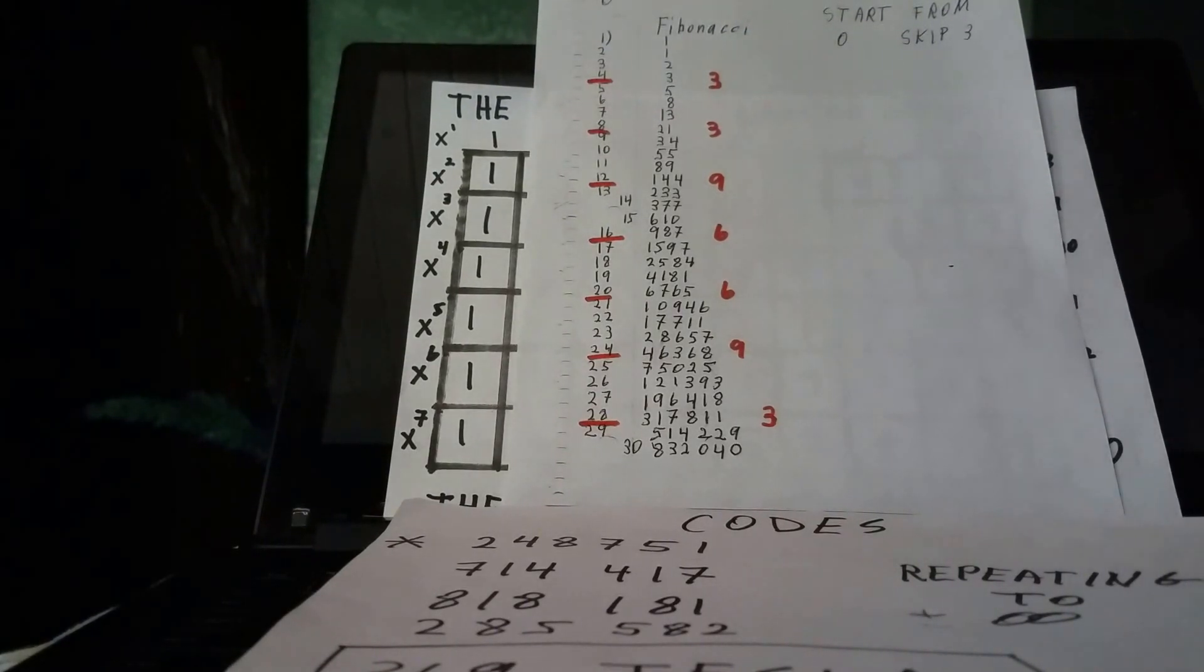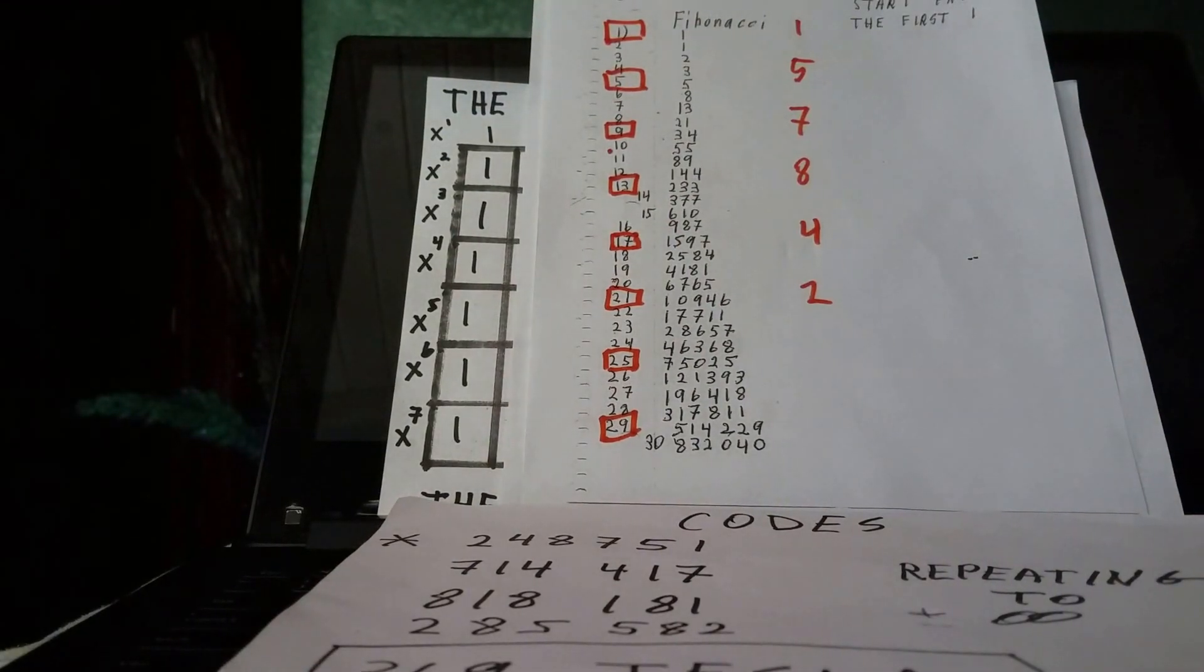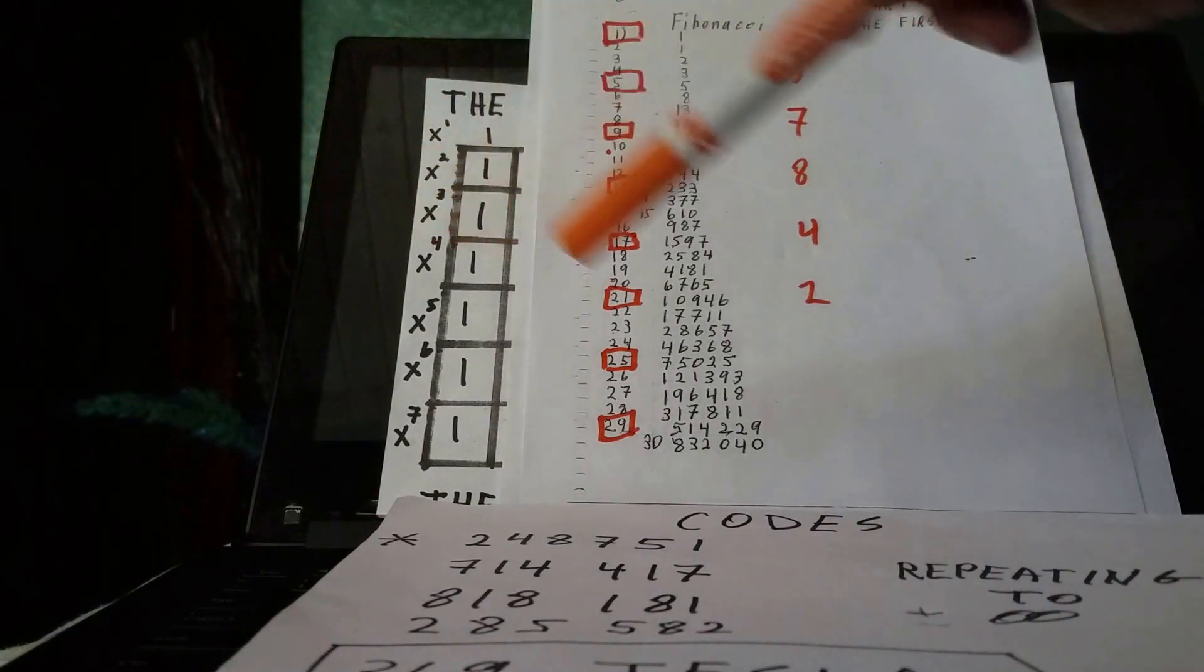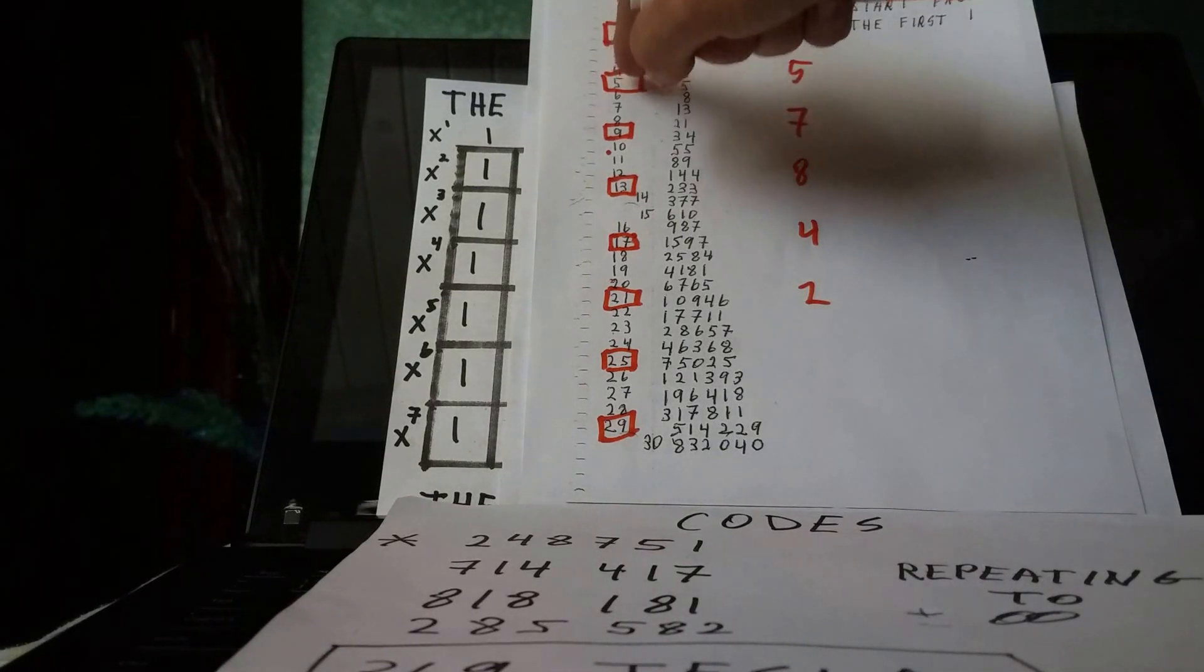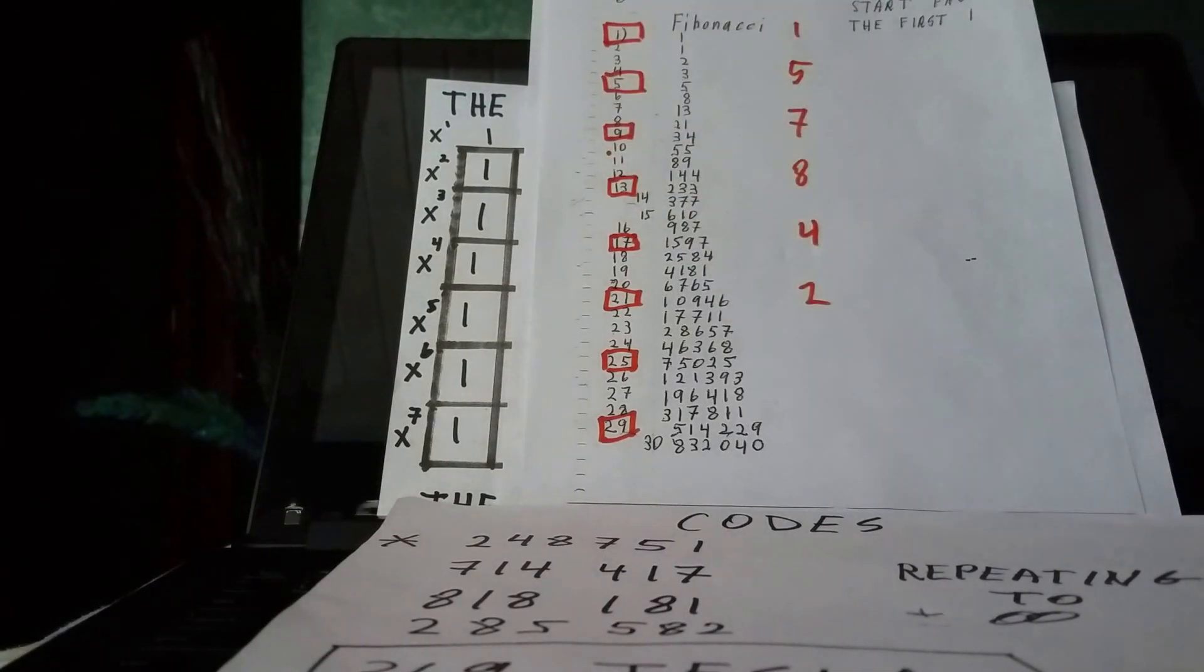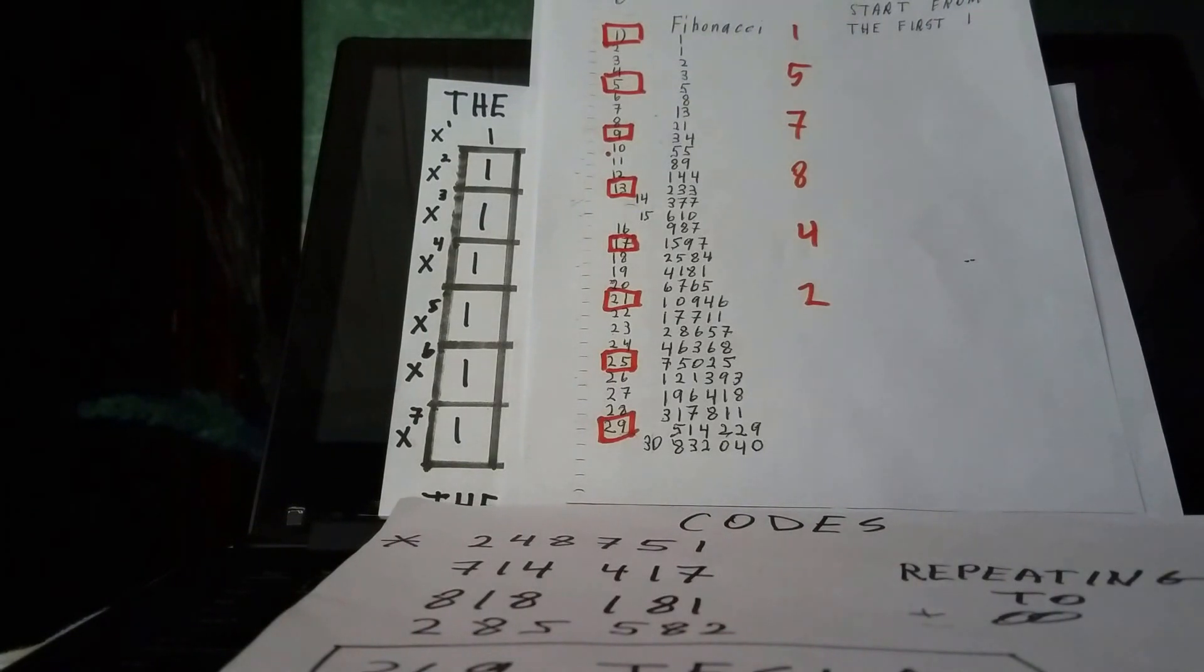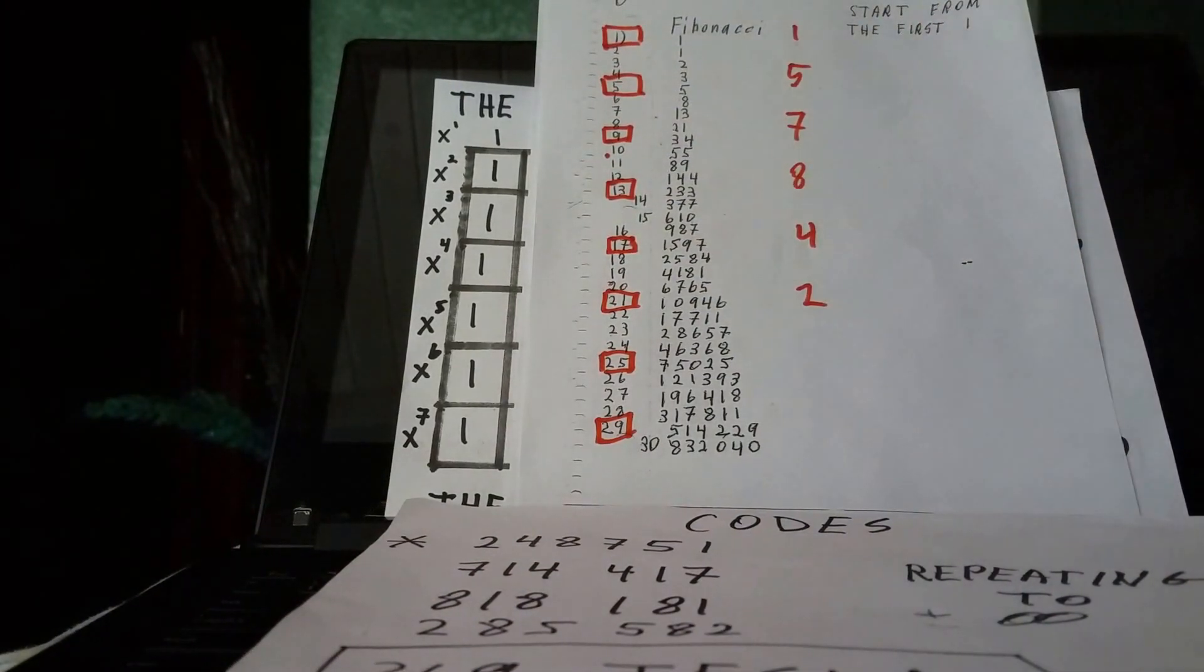If we are to take the Fibonacci code and reduce the numbers, of course, and we start with the first one in the Fibonacci code, and we take these same intervals, 1, 2, 3, bang, 1, 2, 3, bang, 1, 2, 3, bang, we will come up with the 2, 4, 8, 7, 5, 1 code, which is the 369 code as well. And this is the 369 code. This is the 369 code.